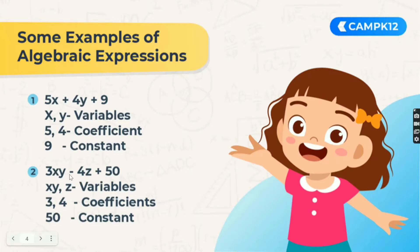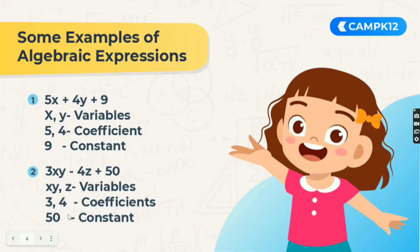Moving to the next example: 3xy minus 4z plus 50. We take xy as a whole and not individually because x and y are not separated by any algebraic operation, so xy is one single variable. Similarly, z is attached to 4 and hence z is also a variable. 3 is the coefficient of xy and 4 is the coefficient of z. And 50, not being attached to any variable, is the constant.